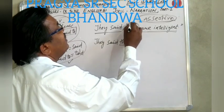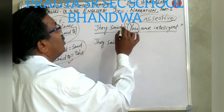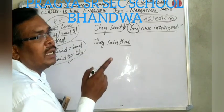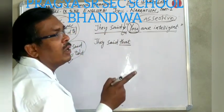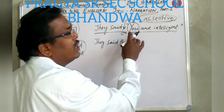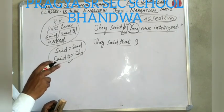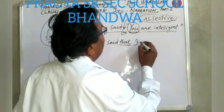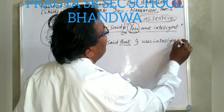Here the subject is 'you', which is second person. Second person will be changed according to the object. But here there is no object, so we shall assume 'me' as a sub-object. When 'you' is changed according to 'me', it will be 'I', because 'you' is in nominative case — used as a subject. So we write the subject form of 'me', which is 'I'. Then the tense will be changed, so: I was intelligent.